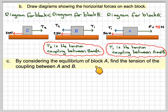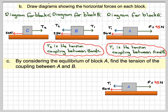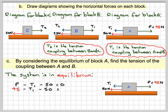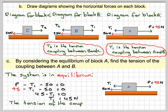By considering the equilibrium of block A, find the tension coupling between A and B. Drawing block A again: the system is in equilibrium, so we can say P minus T1 minus 50 is equal to 0, because it's in equilibrium, i.e. at constant velocity. So, 95 minus T1 minus 50 equals 0. 95 minus 50 gives 45 minus T1 equals 0, giving T1 equals 45 newtons. Therefore, the tension of the coupling between A and B is 45 newtons.